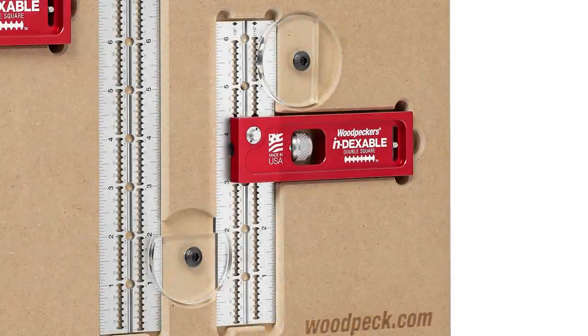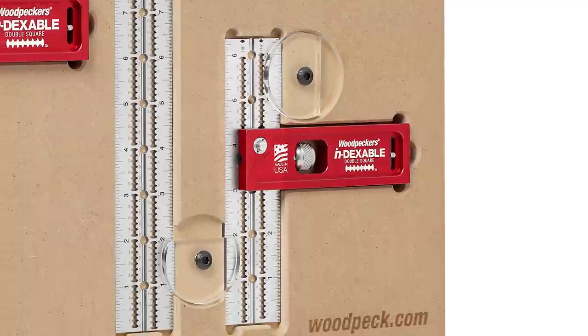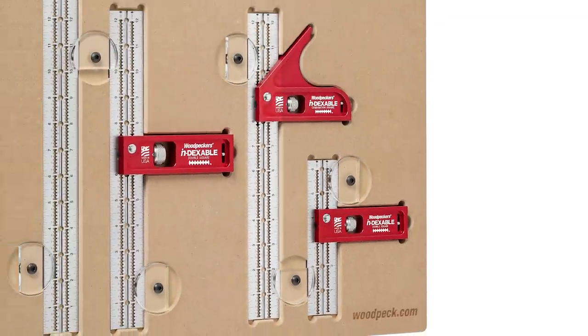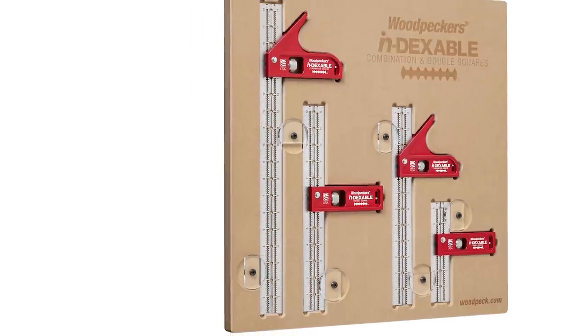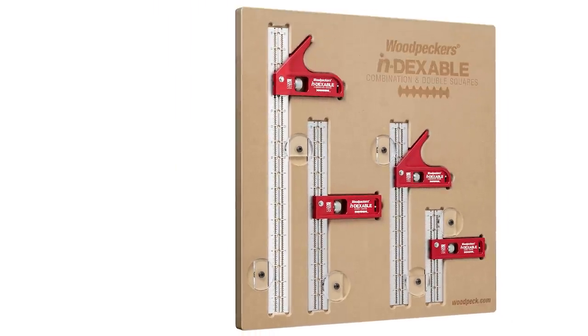The standard double square comes with a six inch blade. The standard combination square comes with a 12 inch blade. The XL double square comes with a 12 inch blade. And the XL combination square comes with an 18 inch blade.